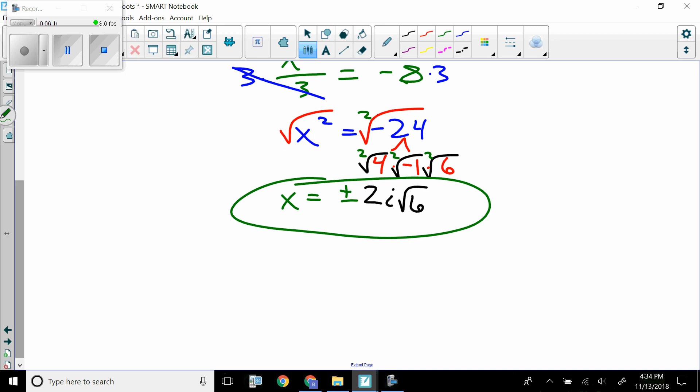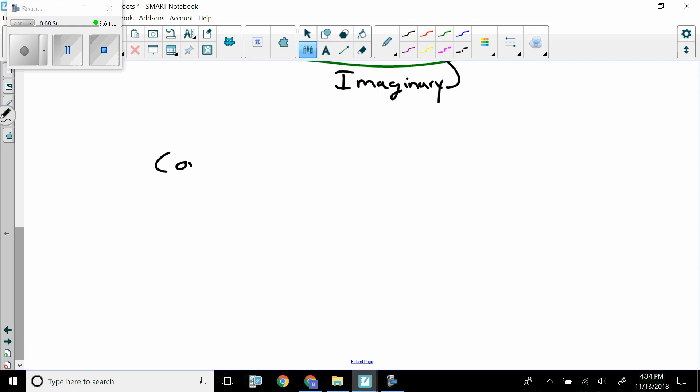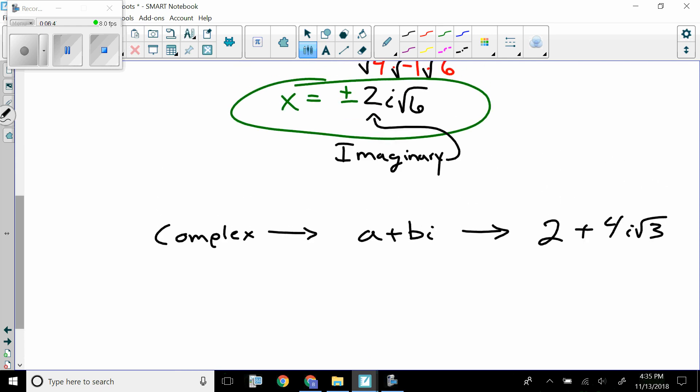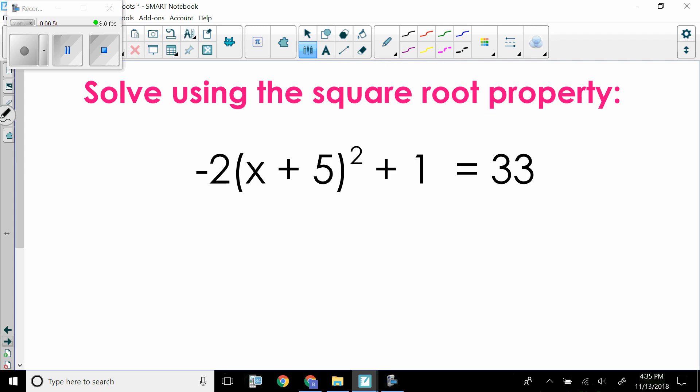Are these answers that we got imaginary, real, or complex? Well, the answer to that is, of course, they are just imaginary. These are just imaginary solutions, because this is only an imaginary part. Do not forget, for it to be complex, it would have to be a plus bi, which would look something like 2 plus 4i radical 3. That would be an example of a complex number.